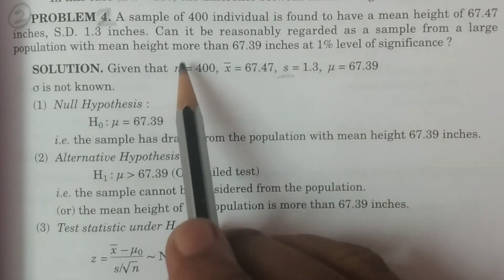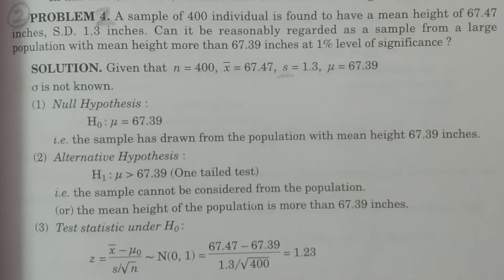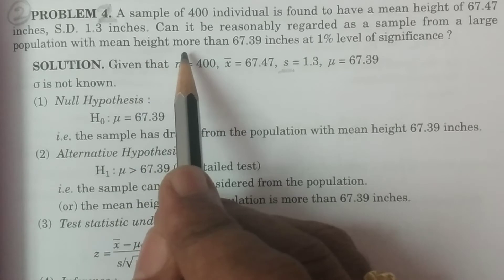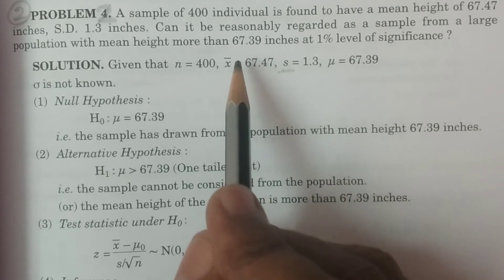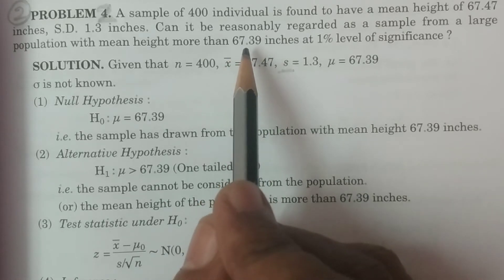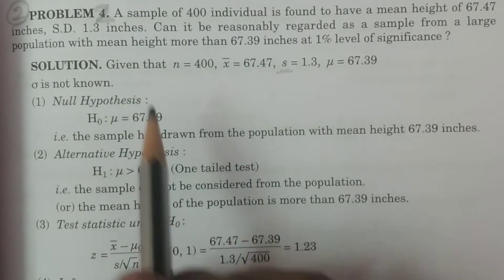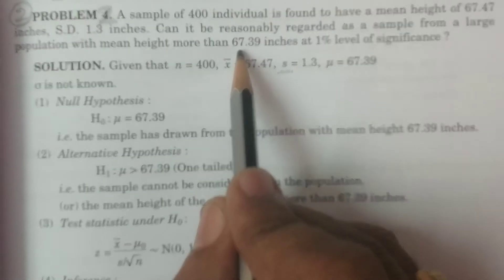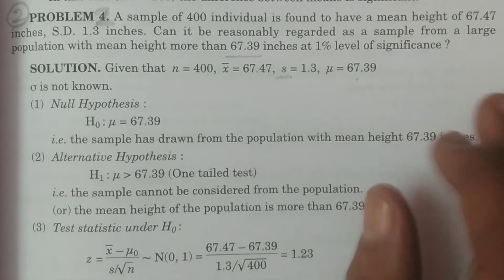The question is: can it be reasonably regarded as a sample from a large population — that is, whether the sample is considered drawn from the large population. We have to test whether the mean height is more than 67.39 inches. This is the mean of the population, mu = 67.39. At 1% level of significance, the level of significance is 1%.